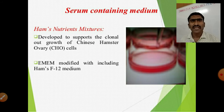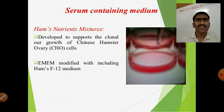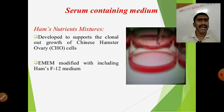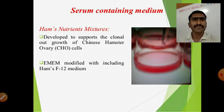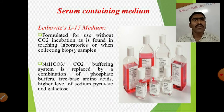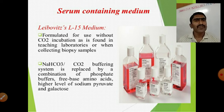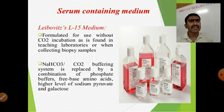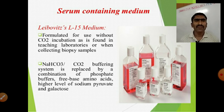HAM's Nutrient Mixture was developed to support the clonal outgrowth of Chinese Hamster Ovary (CHO) cells. The LiBovitz L-15 medium is formulated for use without CO2 incubation, as found in teaching laboratories or when collecting biopsy samples. Its NaCO3/CO2 buffering system is replaced by a combination of phosphate buffers, free-base amino acids, higher levels of sodium pyruvate, and galactose.